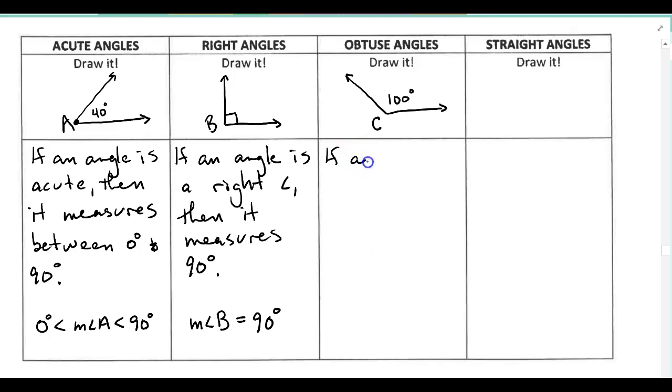Again, we're between 90 and 180. We can't equal 90 and we can't equal 180. If we wanted to make an inequality statement, we've got 90 degrees is less than the measure of angle C, which is less than 180 degrees.